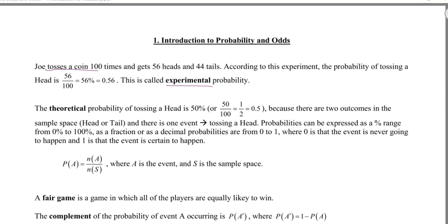The theoretical probability of tossing a head is 50%. If we just think about theoretical probabilities — what are the possible outcomes? Well, you can get a head or a tail, so there are two possible outcomes. There's one event, which is that you'll toss a head. So if you do that 100 times, then 50 of those 100 times, in theory, you will get a head. 50 out of 100. As a fraction, we can reduce that to 1/2, as a decimal 0.5, and as a percentage 50%.